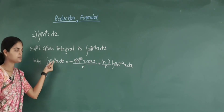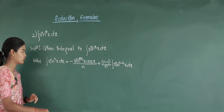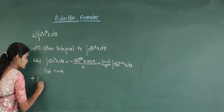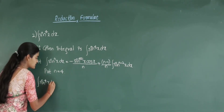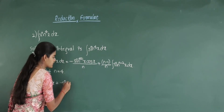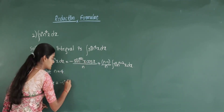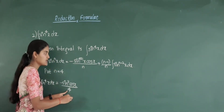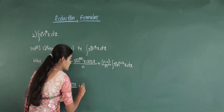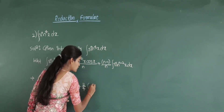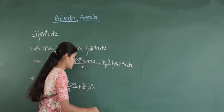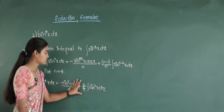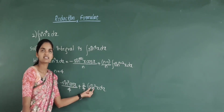To get sin raised to 4, we substitute n equal to 4. That implies integration of sin raised to 4 x into dx is equal to minus sin raised to 3 x cos x divided by 4, plus n minus 1 is 3 divided by 4, integration of sin raised to 4 minus 2 — that is sin square x. Now see here, we have again got sin raised to some power in the result.